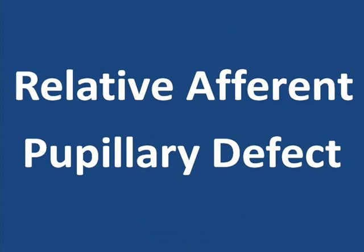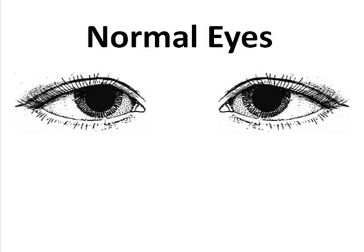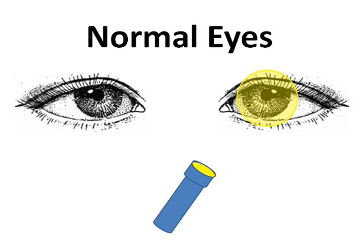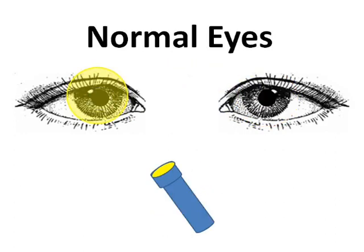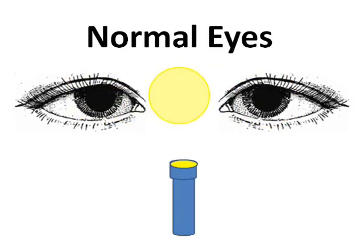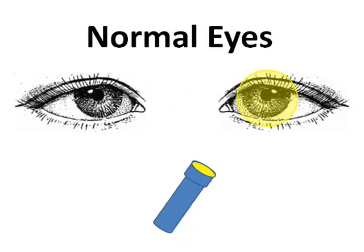Another change inside the eye has to do with the reaction of the pupil to light. The best way to explain this particular type of change is to demonstrate the test by which the change is detected. The test is administered in a dimly lit room while the patient is asked to focus on an object in the distance. The doctor uses a flashlight to illuminate first one eye and then the other, alternating eyes for several iterations. This test is called the swinging flashlight test.